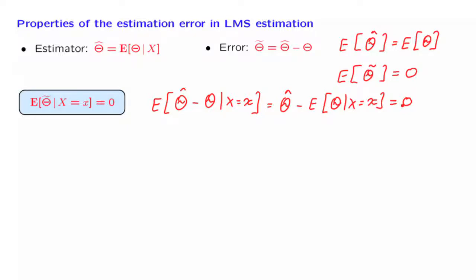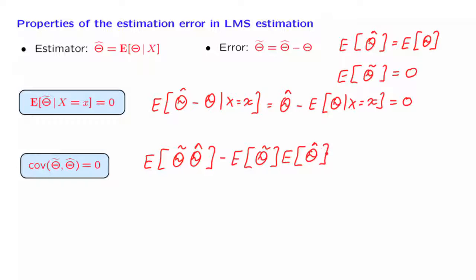Let us now move to a slightly more complicated question. What is the covariance between the estimation error and the estimate? We will calculate the covariance as follows. It is the expected value of the product of the two random variables that we're interested in minus the product of their expectations. Now, we already calculated that the expected value of the estimation error is equal to 0. And therefore, this term here disappears. This term is equal to 0. So we now need to calculate the first term.